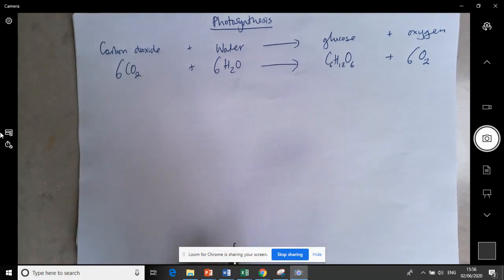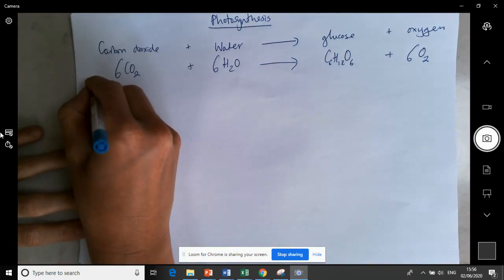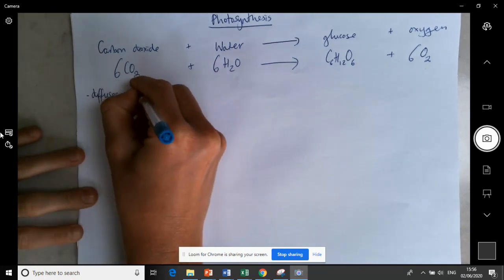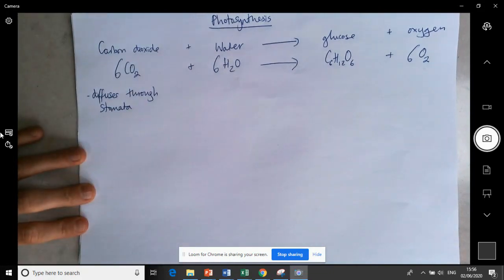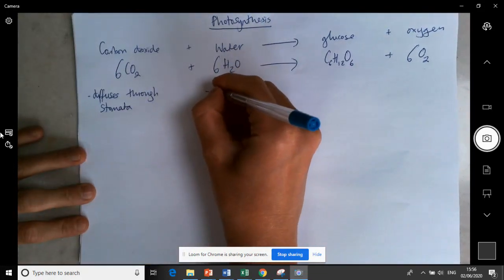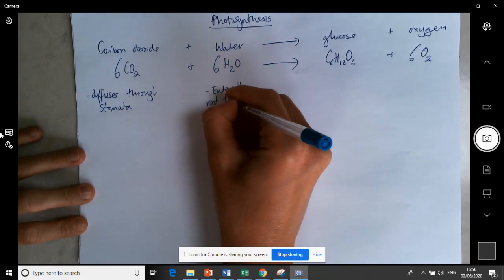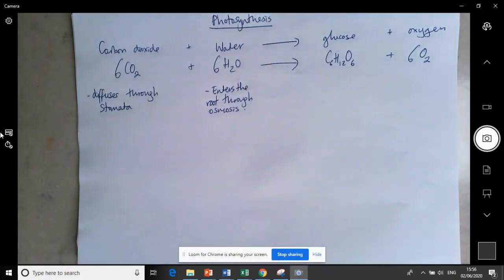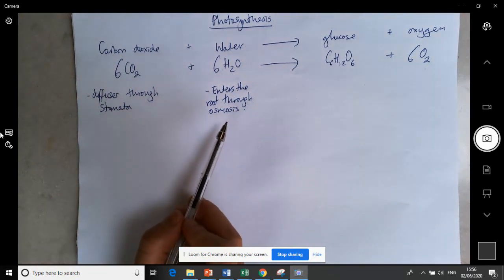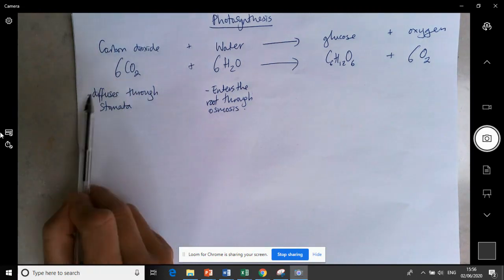So we can think about where we get each of these molecules from. The carbon dioxide diffuses through stomata from the environment into the leaf. The water enters the root through osmosis, and we can link this back to earlier lessons on the transport section and plant transport mechanisms.